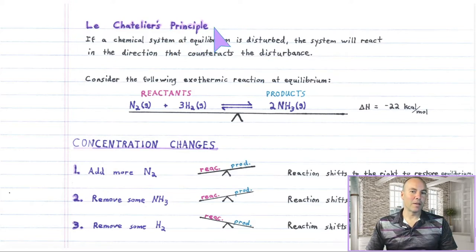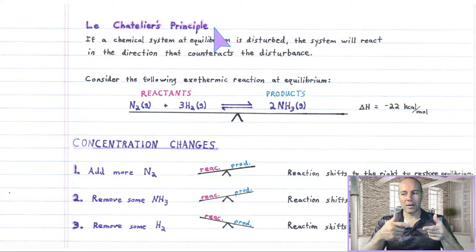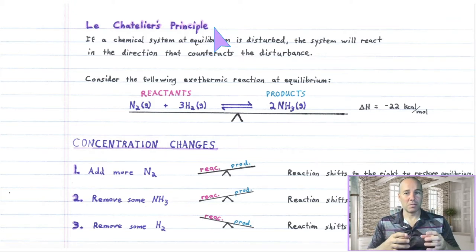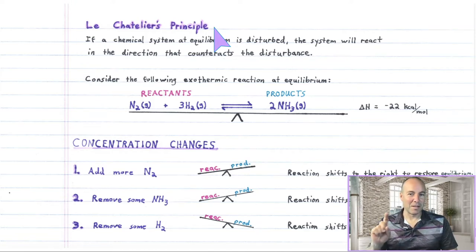In the previous lecture we finished with a question. If you have a reaction which is at equilibrium and you add extra chemical — either reactant or product — to the mixture, what happens? Does the system stay at equilibrium? Is it shifted away? Is it disturbed somehow? Well the answer is yes. It messes up the equilibrium, and Le Chatelier's Principle explains how the system responds.